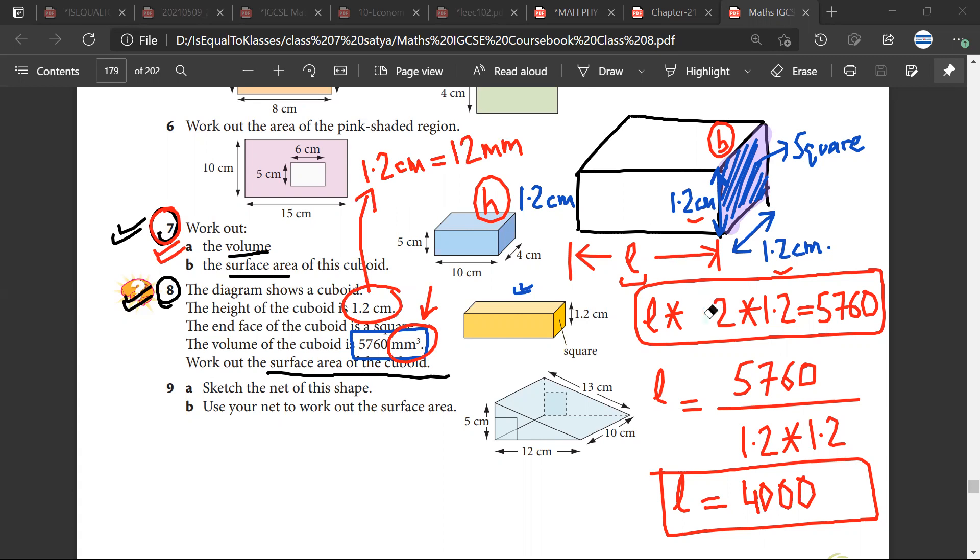So that is why there is a mistake that I have done. So you need to modify this. So this would be 12, this would be 12. 12, 12, 12, 12. Have you guys understood? Yes.